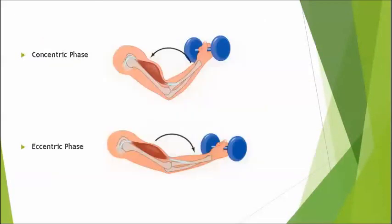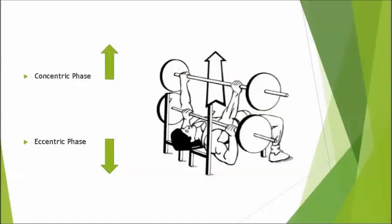During a movement where we move a weight in one direction then back again, there are typically two phases: the concentric phase and the eccentric phase. The concentric phase is where the muscles we are wanting to work are contracting and shortening, usually against resistance. So in a bench press, the concentric phase would be when we have the bar near our chest and are trying to push it up. The eccentric phase would be when we are lowering the bar from up high to down near our chest.